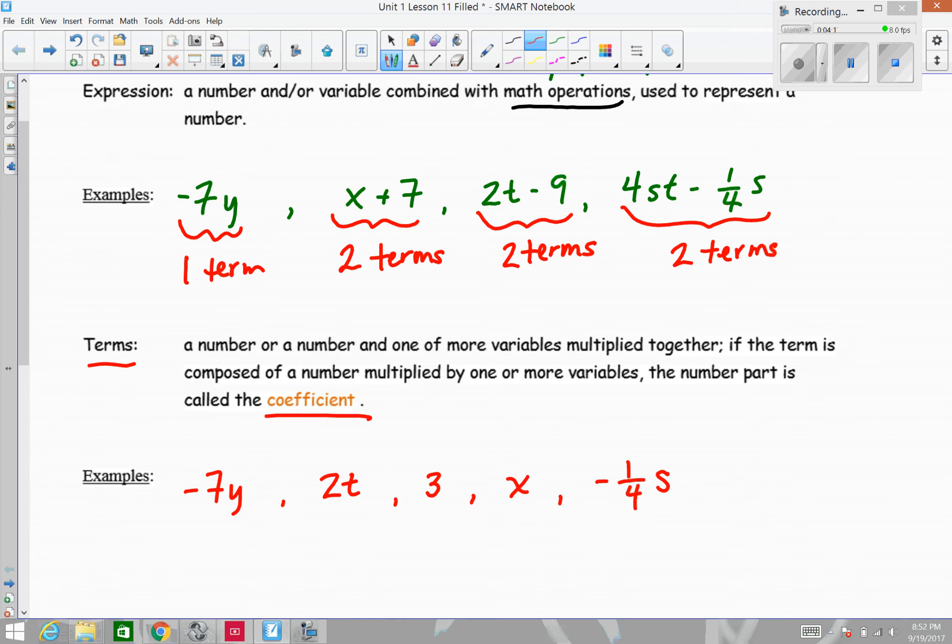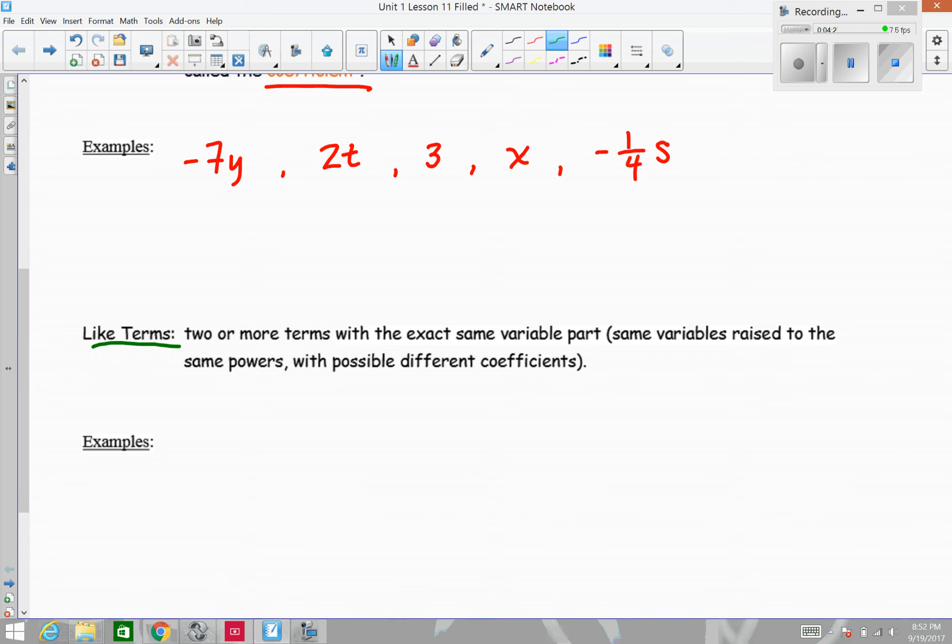When we talk about like terms, we are talking about terms that have the same exact variable part, meaning the variable and the exponents attached to them are the same. It's possible to have like terms with different numbers in front of that same variable part. And if that's the case, then they have different coefficients. So some examples of like terms, 2x and 3x, or 2x and negative 3x, since the variable portion, in each case x and x, are the same and they have the same exponents understood to be 1. Those are like terms.